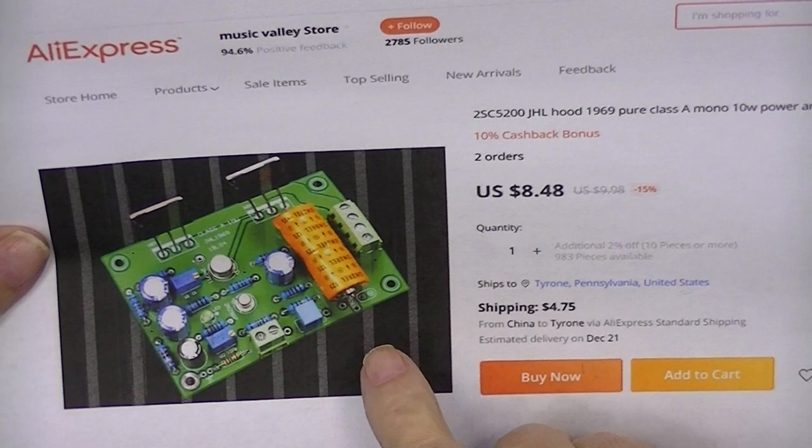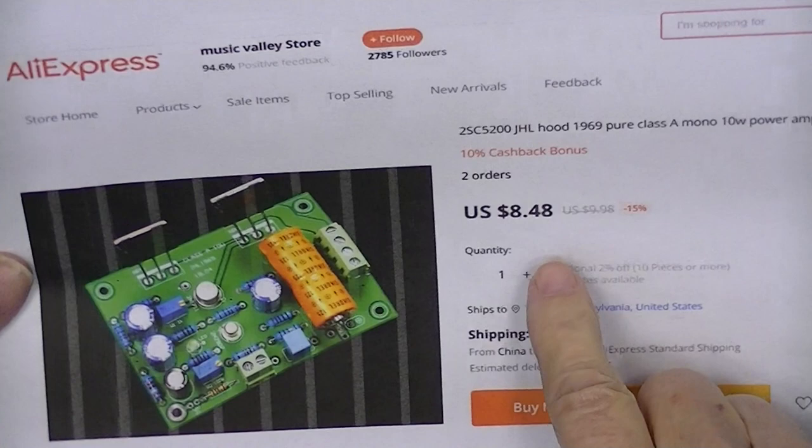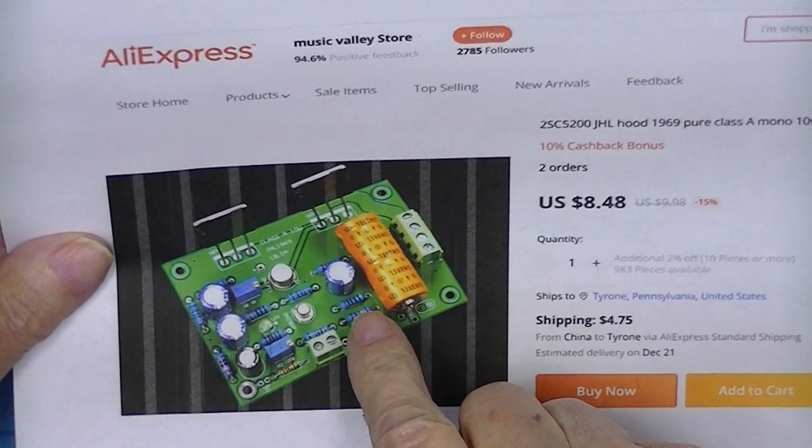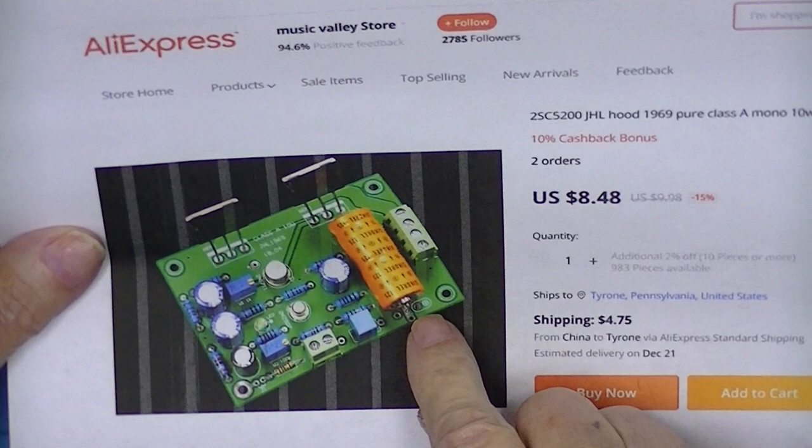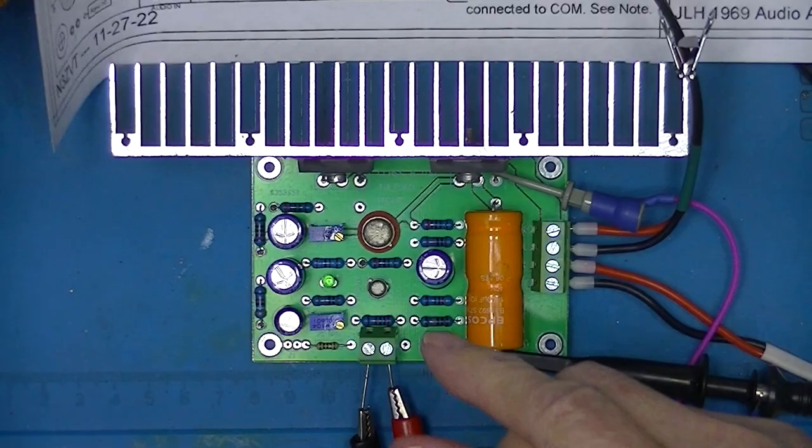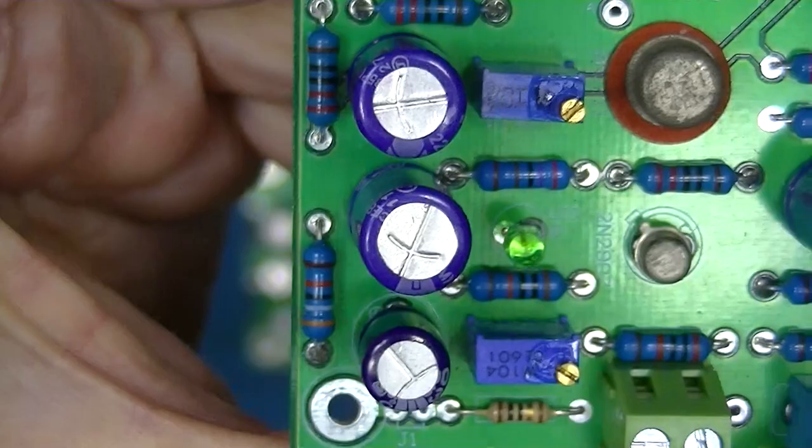There was no option to have it supplied as a DIY kit. It was pre-made. Now this is the second pre-built JLH 1969 amplifier I had and it's the first one that came with these factory adjusted and sealed potentiometers.